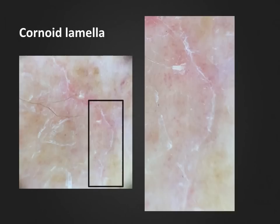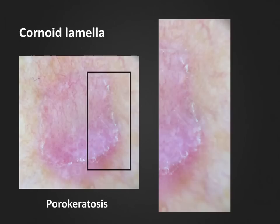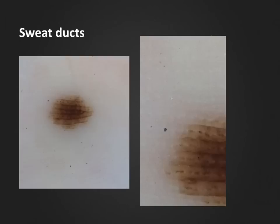Here we have another white structure due to keratin that can be visualized very clearly with dermoscopy: the distinctive hyperkeratotic, ridge-like border of porokeratosis, known as the coronoid lamella. In this other example of a porokeratosis, we can also visualize the classic hyperkeratotic white track at the periphery of the lesion.